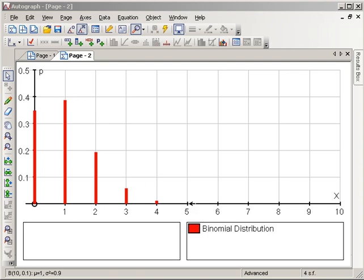And then, for five successes onwards, you can't even see anything on the graph here, because the probabilities are so small.